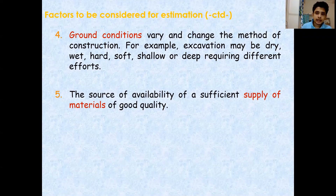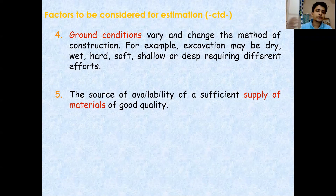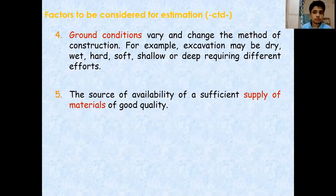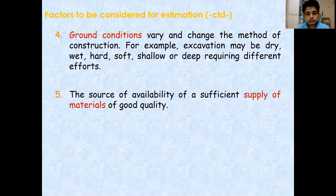Point number five is the supply of materials — cement, sand, reinforcement, etc. Can we get them from a nearby location or do we have to go far away? If we are bringing materials from a distant place, the transportation cost will be higher. If we are bringing them from a nearby location, the transportation cost will be lower.